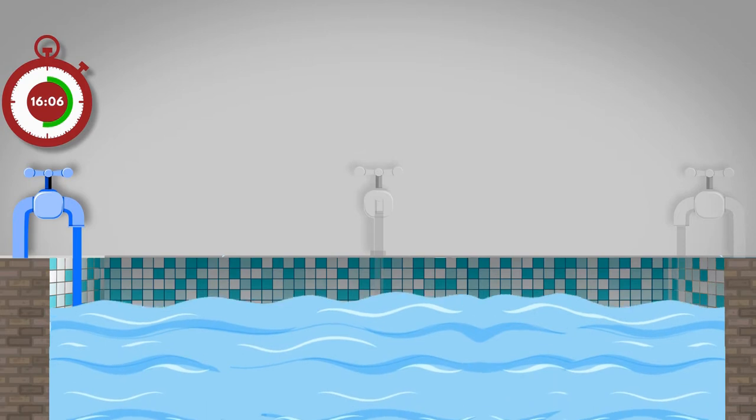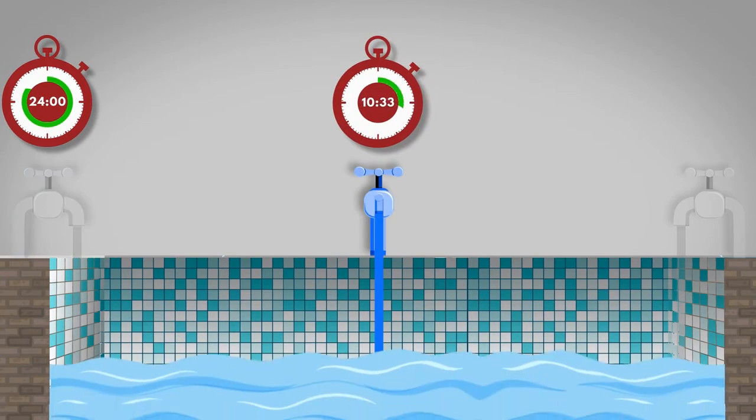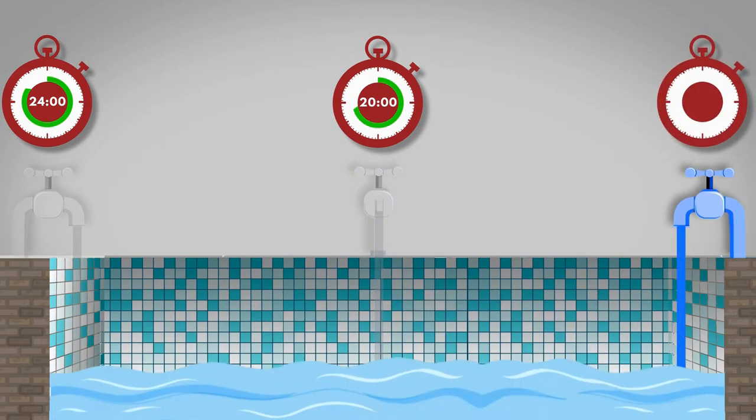The owner knows that the first tap alone can fill the pool in 24 minutes, the second tap alone can fill the pool in 20 minutes, but he doesn't know how much it would take for the third tap alone to fill the pool.